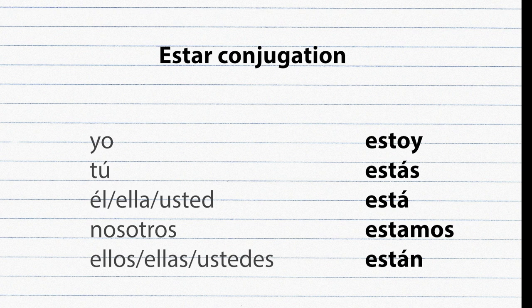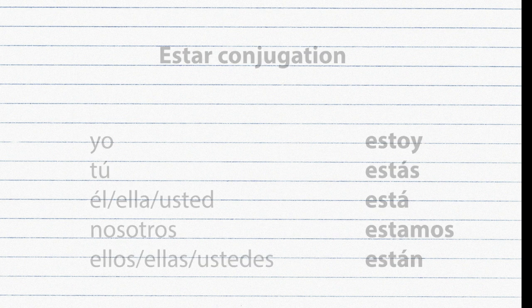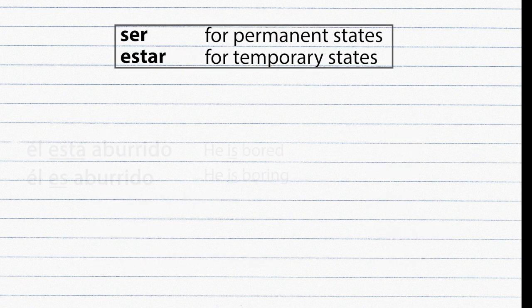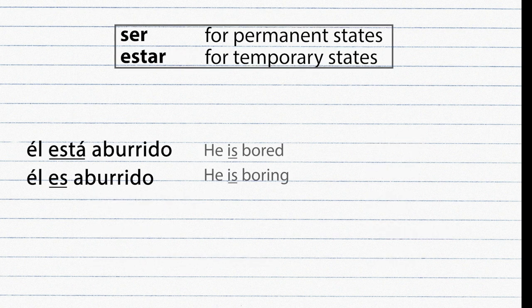ESTAR conjugations: Estoy, Estás, Está, Estamos, Están. Example: 'Él está aburrido' means 'He is bored' — a temporary state, so we use ESTAR. 'Él es aburrido' means 'He is boring' — a permanent characteristic, so we use SER.